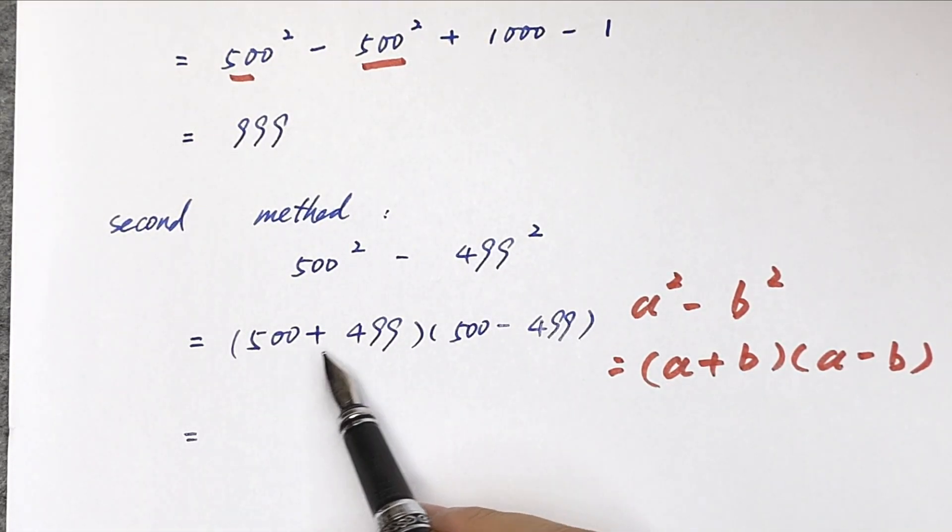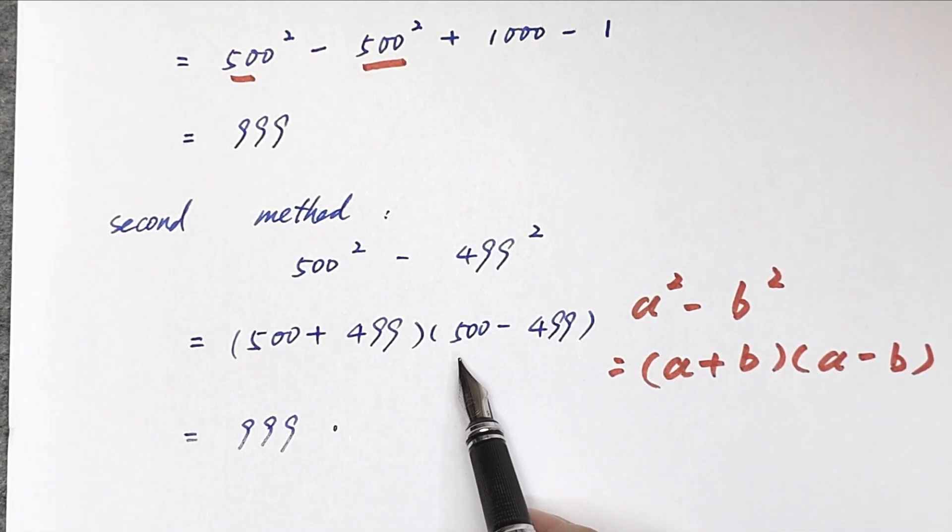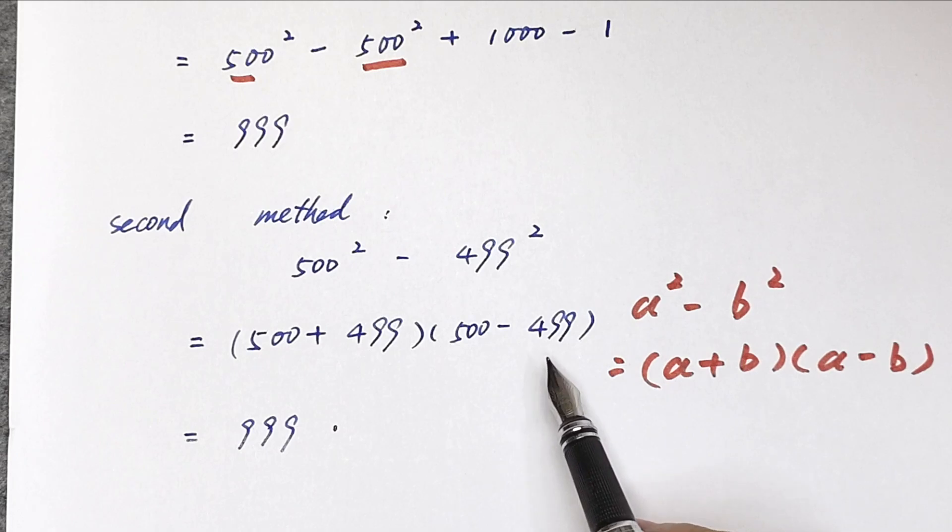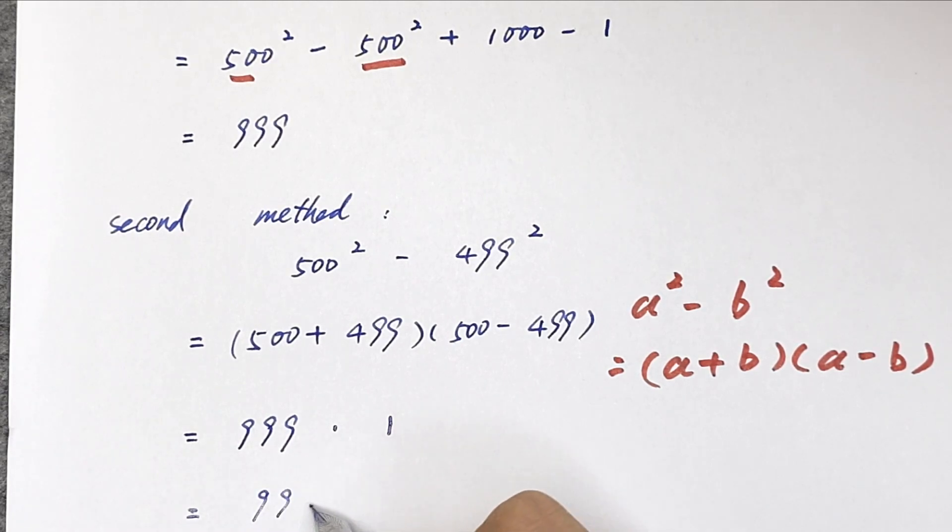500 plus 499 is equal to 999 times 500 minus 499 is equal to 1. So, the final answer is 999.